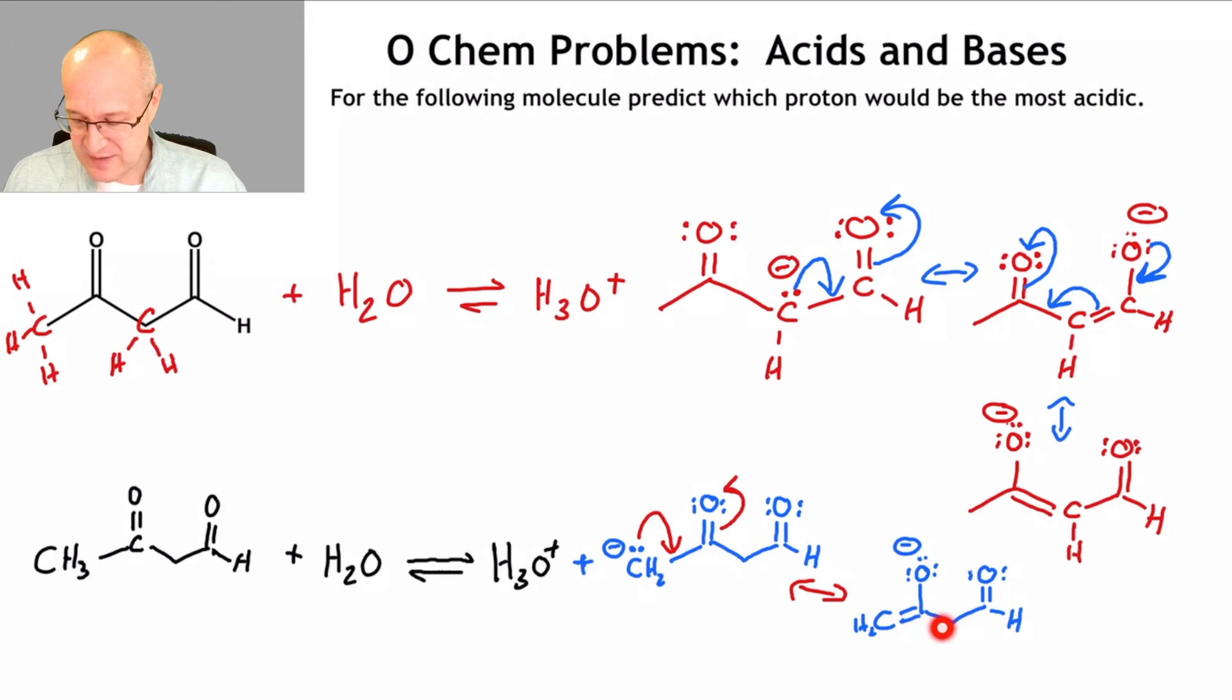So this conjugate base is more reactive than this conjugate base. That means, in the end of the day, that the methylene protons here are more acidic. Because when you deprotonate it, the anion can resonate to one oxygen, sorry here, and then the other. That's much more stable in terms of reactivity towards a proton, okay? So that's how you would determine which proton is more acidic.